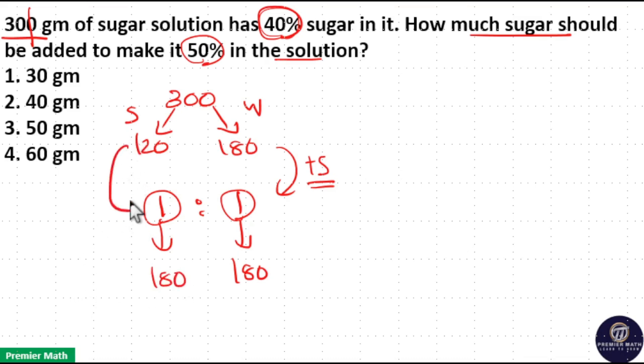Which means here 120 plus 60 will give you 180. Which means you have to add 60 gram sugar to it in order to make this solution 50% sugar solution.